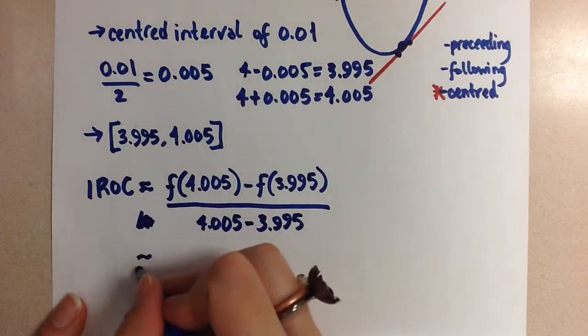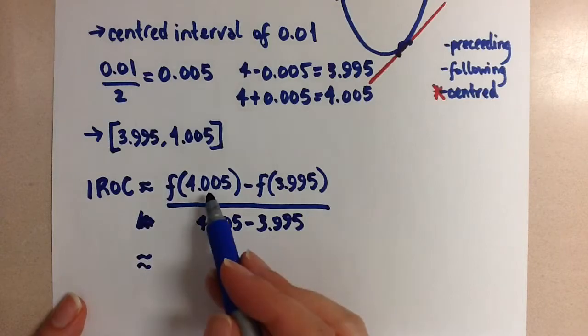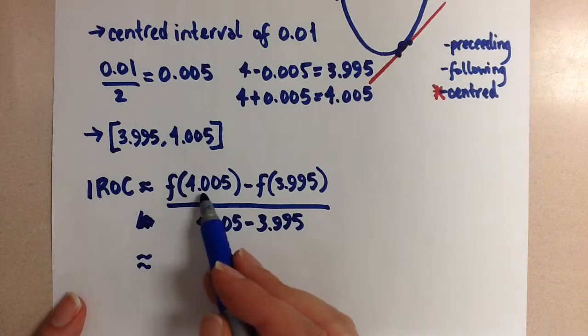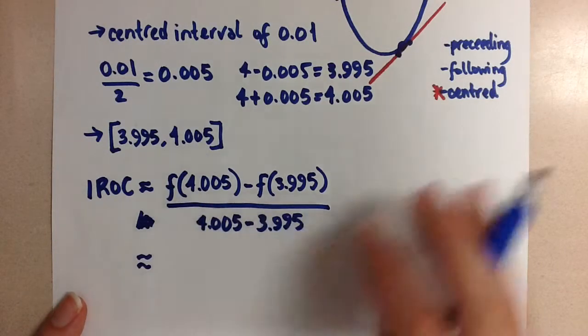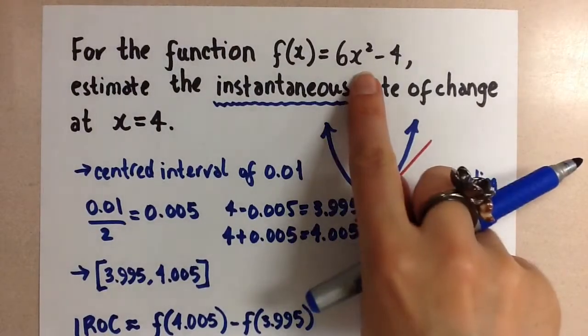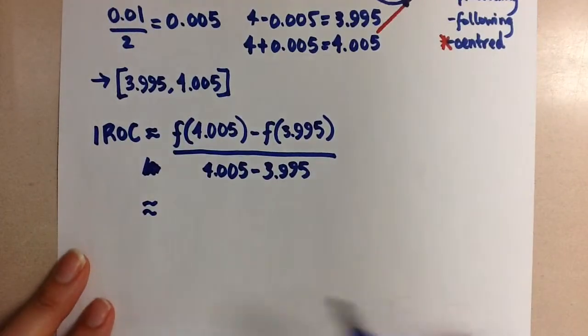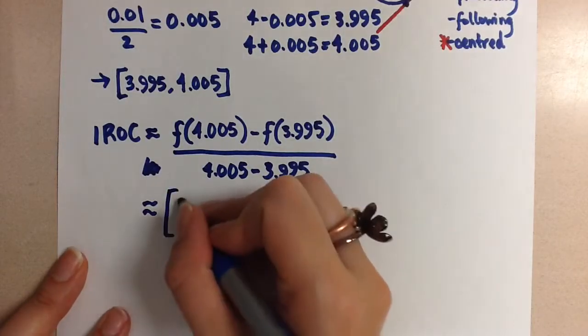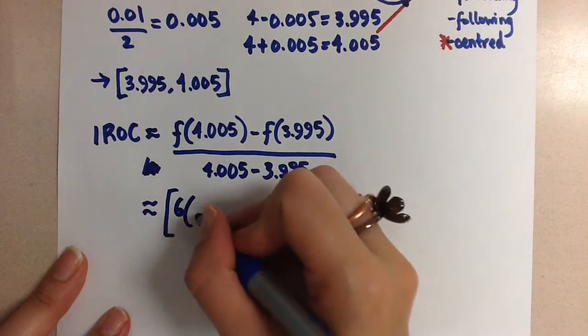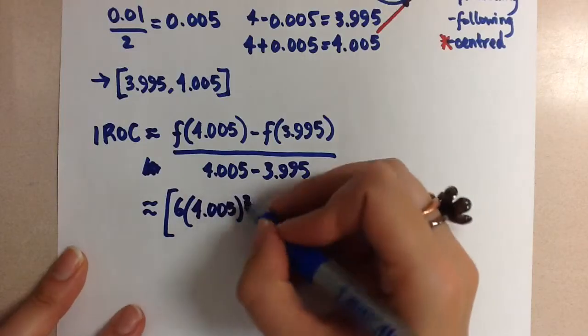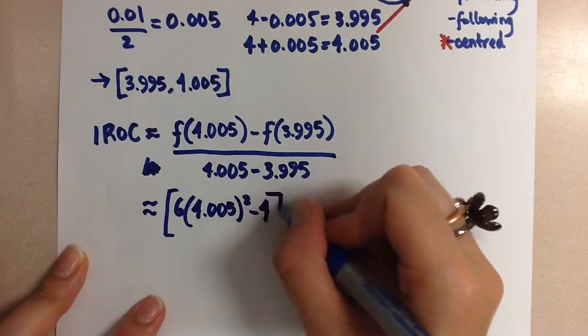Like this. So now, let's continue. When we sub in 4.005 into f, that means we sub it into the original equation for the function. So let's continue and do that. We had 6 times 4.005 squared minus 4.